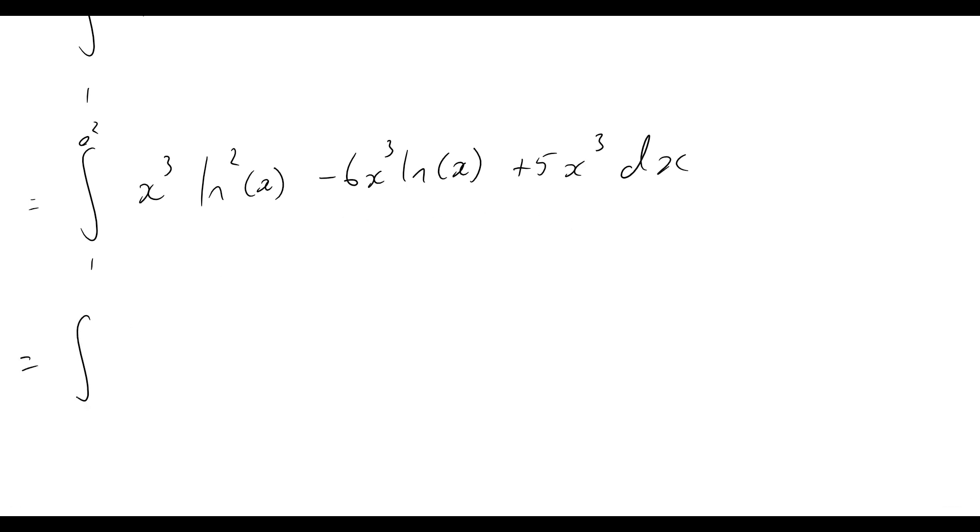We can rewrite this as integral 1 to e squared as x cubed natural log squared of x, and then we'll say minus 6 times the integral of x cubed natural log of x, then plus 5 times the integral of x cubed, and then dx on all of these terms as well.